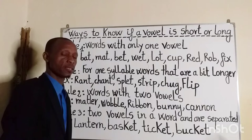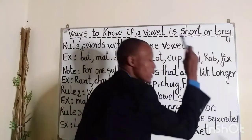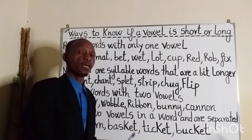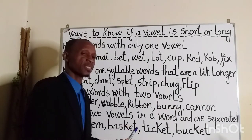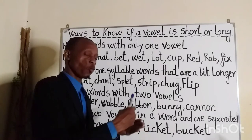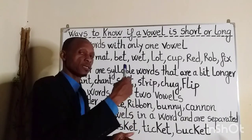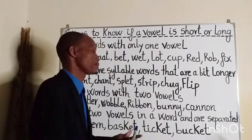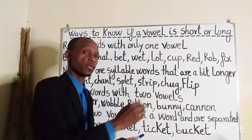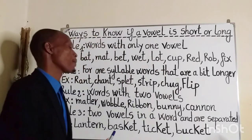'Bunny,' which is a young rabbit; 'cannon' — as a noun, a cannon means a large gun; and 'batter' — as a verb, it means to hit something or someone forcefully.